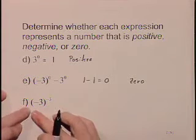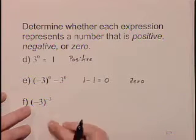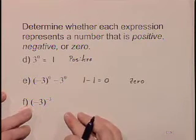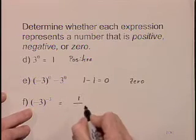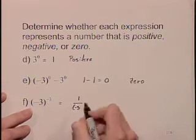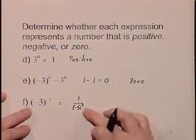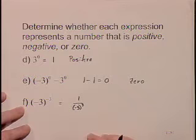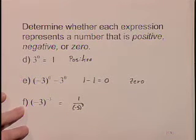Part F. Negative 3 raised to the negative 3 power. We have a couple of negatives going on. Let's keep them straight. Our negative exponent indicates that we need to rewrite our expression with our base in the denominator raised then to a positive number. So this becomes 1 over negative 3 to the third power.